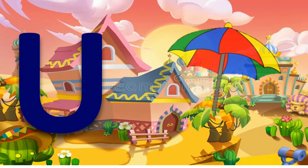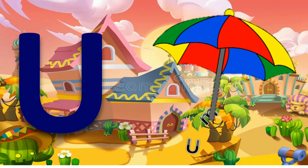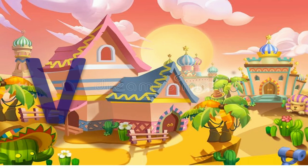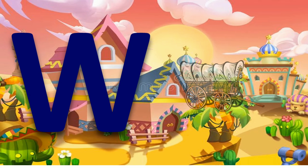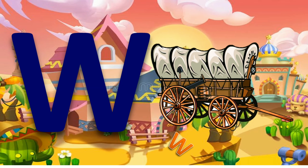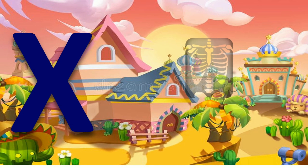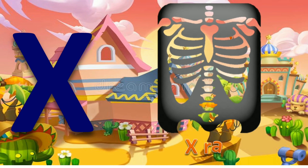U for umbrella. U for umbrella. B for vacuum. W for wagon.